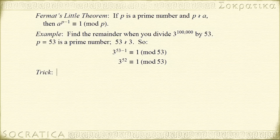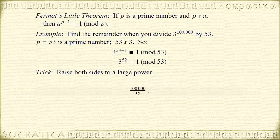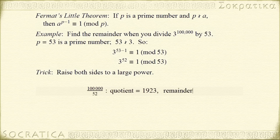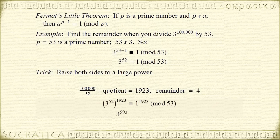Here's the trick: we're going to raise both sides of the congruence to a power. Now, 1 to any power is 1, so the right-hand side won't change. But on the left-hand side, we're going to pick a number so that we get really close to 3 to the 100,000th power. We just do straight division: if you divide 100,000 by 52, you get a quotient of 1,923 and a remainder of 4. So we're going to raise both sides of the congruence to the power of 1,923. On the left-hand side, we multiply the exponents and we get 3 to the 99,996th power is congruent to 1 mod 53.